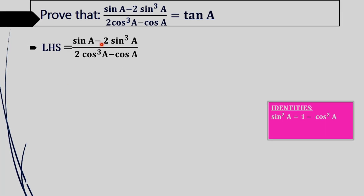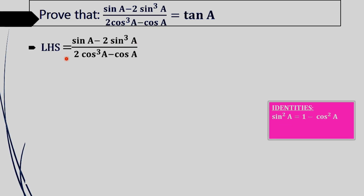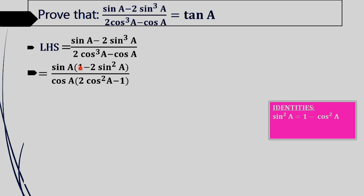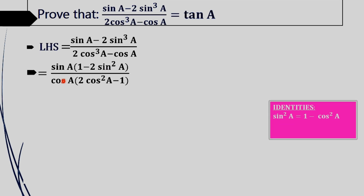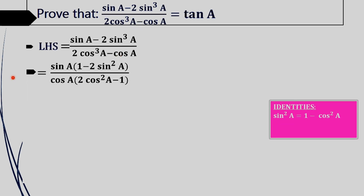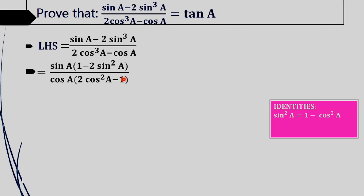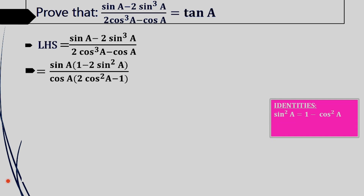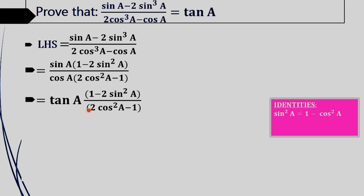Sin a is a common term in the numerator and cos a is a common term in the denominator. We can take these two terms outside. On taking sin a outside, 1 will remain, and sin cube a gives sin square a. On taking cos a outside, 2 cos square a will remain, and minus 1 will remain. Now, sin a divided by cos a is tan a.